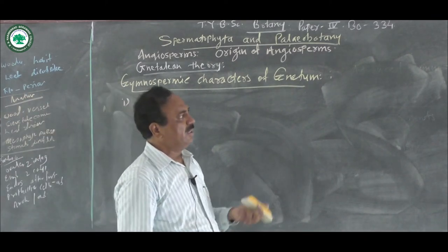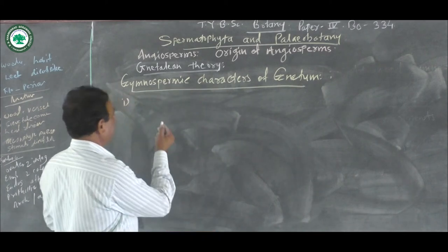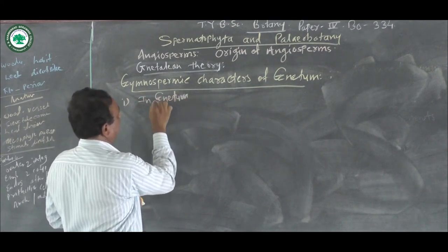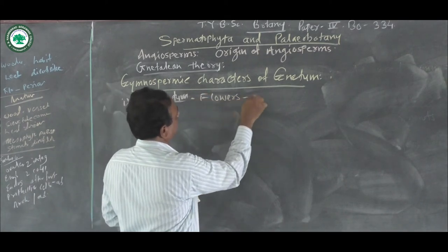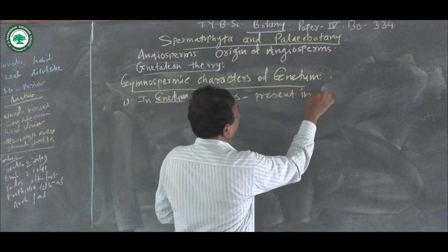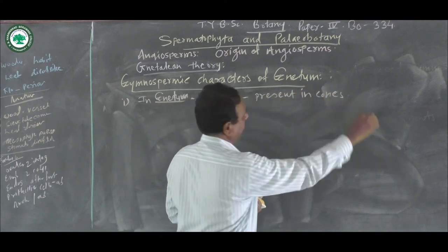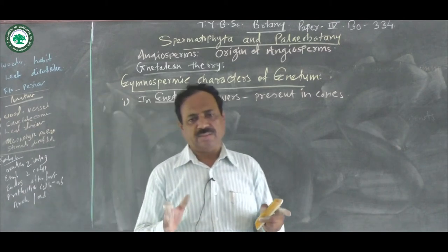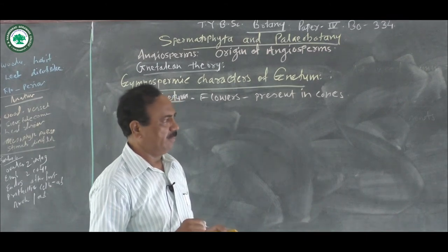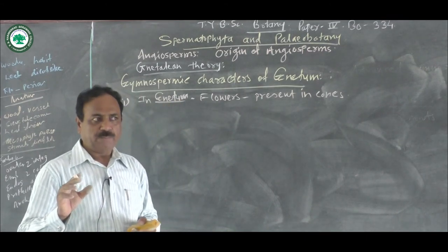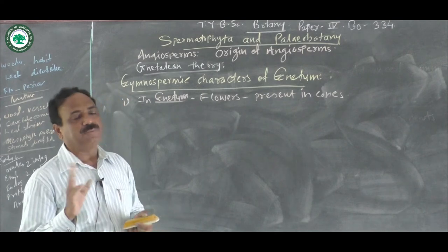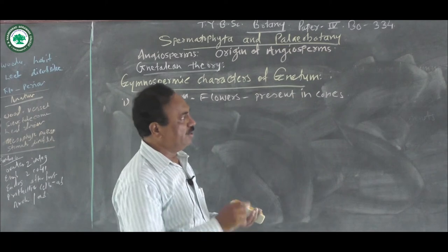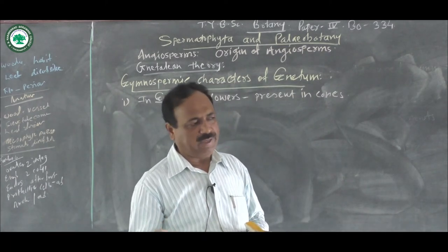As Netum is a plant of the group gymnosperm, it shows many gymnospermic characters. The first important characteristic is that the flowers are present in cones — flowers present in cones. In case of all angiospermic plants, flowers are simple with calyx, corolla, androecium, gynoecium, and so on, and they are grouped together forming inflorescences. But in case of this gymnospermic plant Netum, the flowers are present in cones — there are male cones and female cones.